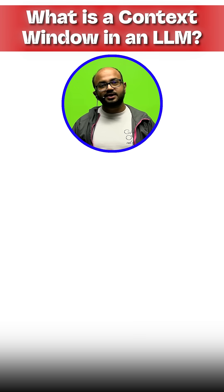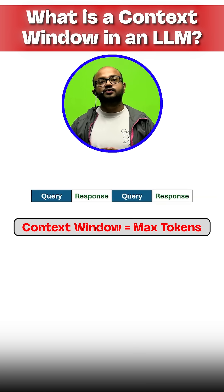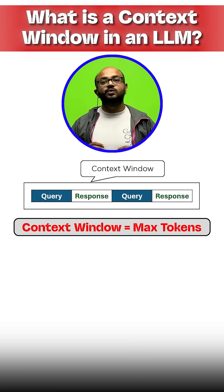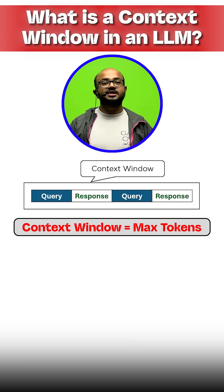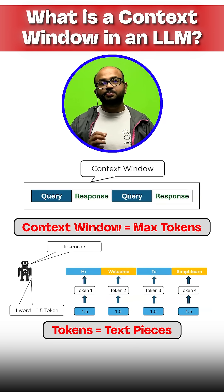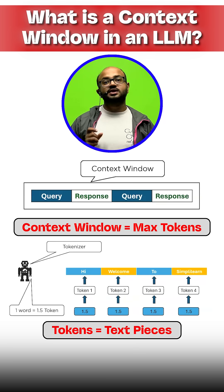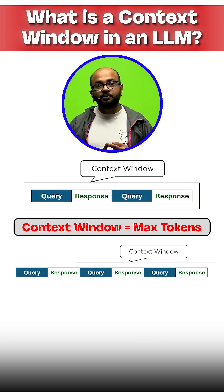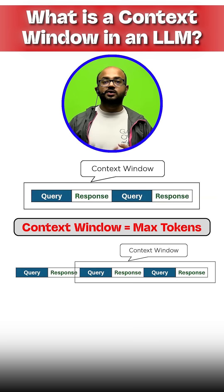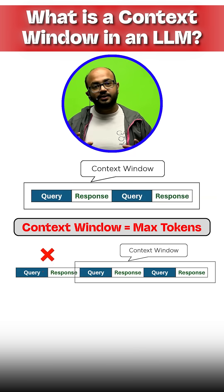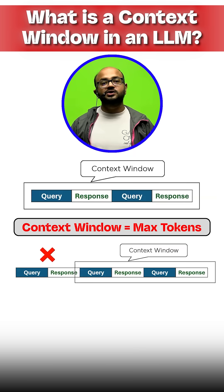Simple answer: it's the maximum number of tokens the model can consider at any one time. Think of it as its working memory. Tokens, if you remember, are tiny pieces of text — words, parts of words, or characters. If your input, your prompt, your conversation history, or documents exceeds this limit, the oldest parts get forgotten. It's like short-term memory loss for AI.